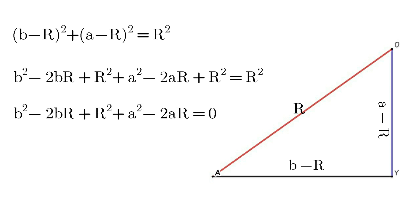Or B² minus 2BR plus R² plus A² minus 2AR equals 0. We can rearrange this equation. Then R² minus R(2A plus 2B) plus (A² plus B²) equals 0.